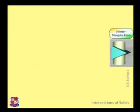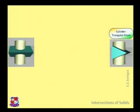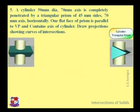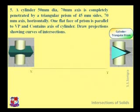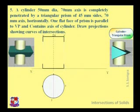The next problem is about a cylinder and triangular prism. A vertical cylinder is penetrated by a triangular prism. A cylinder of 50 mm diameter and 70 mm height is completely penetrated by a triangular prism of 45 mm sides and 75 mm axis horizontally. Since penetration is horizontal, first draw the front view and top view of the cylinder: the top view is a circle and the front view is a rectangle.